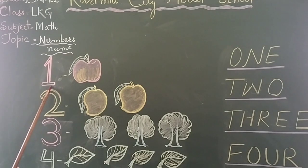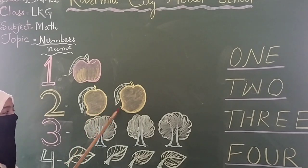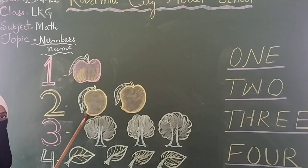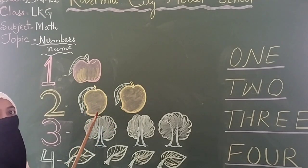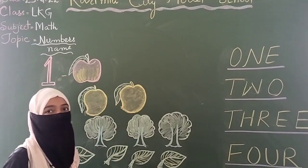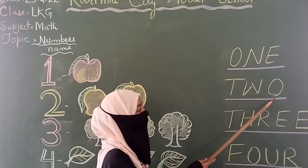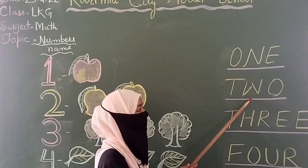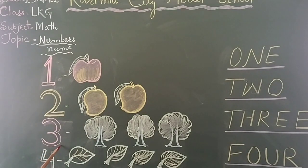Now let's go to the next. What's written here? Two. How many mangoes are there? Let's count: one and two. What is this? This is a mango. There are two mangoes. Now let's say the spelling of two: T-W-O, two. T-W-O, two.